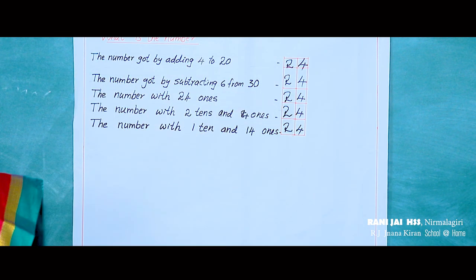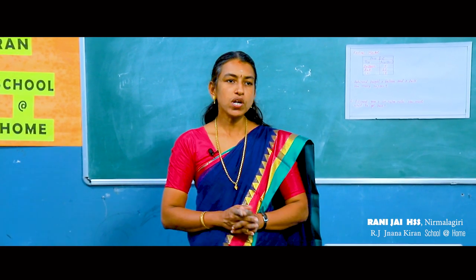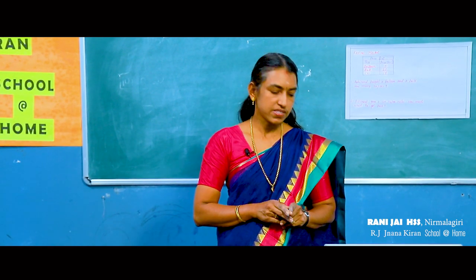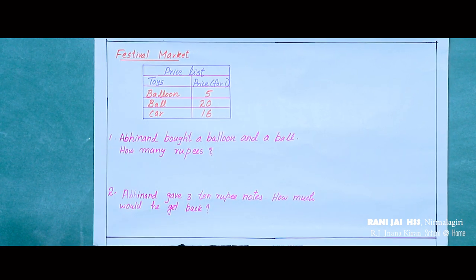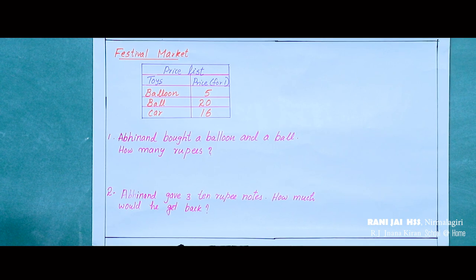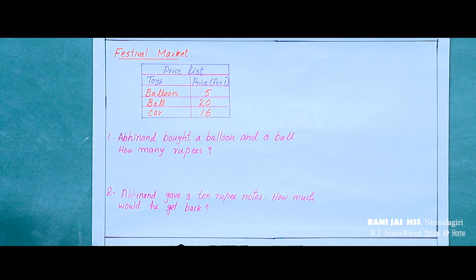Students, look here — all answers are the same: 24. Now all of you look at this price list. Price for 1 balloon is 5 rupees. Price for 1 bowl is 20 rupees. Price for 1 ball is 20 rupees. Price for 1 car is 16 rupees. There are some questions based on this price list.